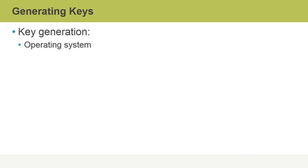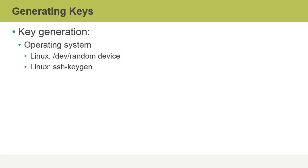Key generation can occur within an operating system. For example, in Linux, we can use the /dev/random device to generate keys. We could also use the ssh-keygen command to generate keys used for SSH authentication. SSH allows Linux administrators to remotely connect over the network to the host for command line administration.